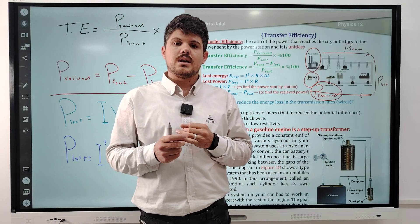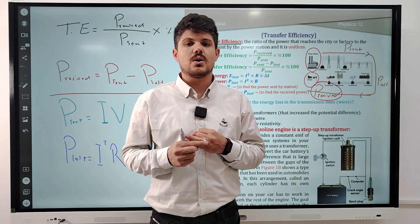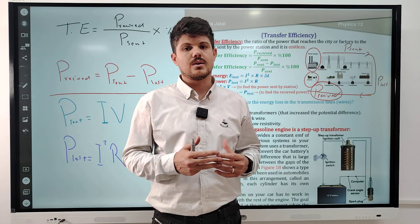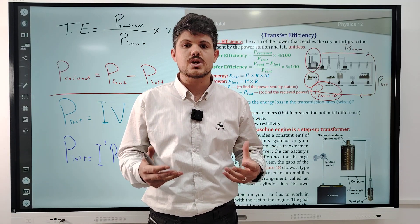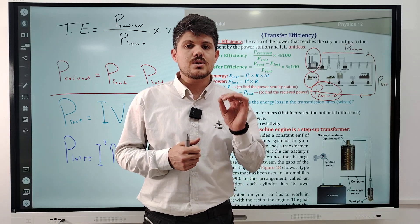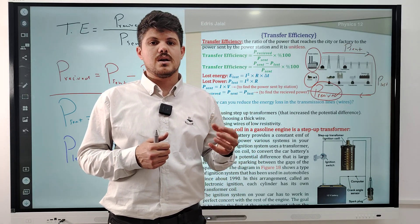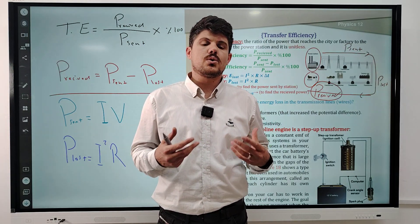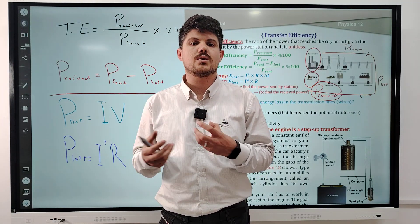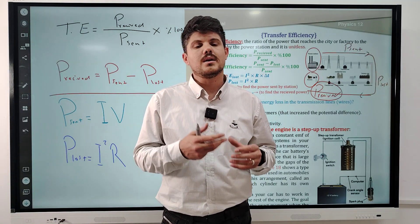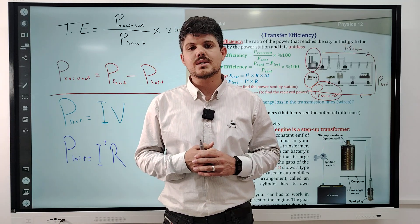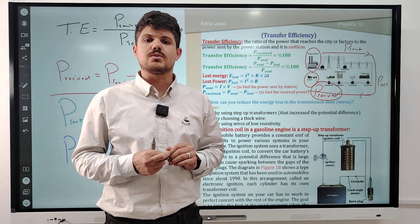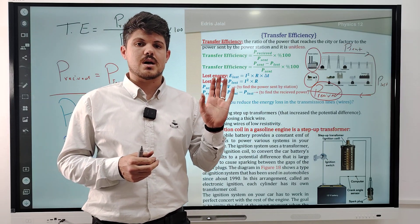The second factor is the thickness and thinness of the wire — the cross-section area. This relation is inversely proportional. For example, the thin wire has more resistance because resistance with cross-section area is inversely proportional. The thick wire has less resistance, and the thin wire has more resistance.